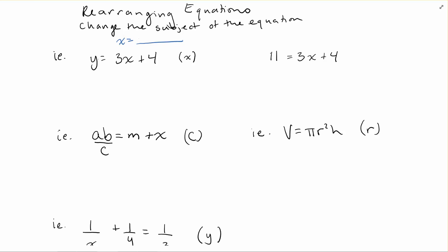So as an example, let's just look at this one first. We have 11 is equal to 3x plus 4. So if I told you to just solve for x, you'd probably be alright with this. You would say, okay, well that's 3x plus 4, so I'm going to minus 4 from both sides. That's going to give me 9 is equal to 3x.